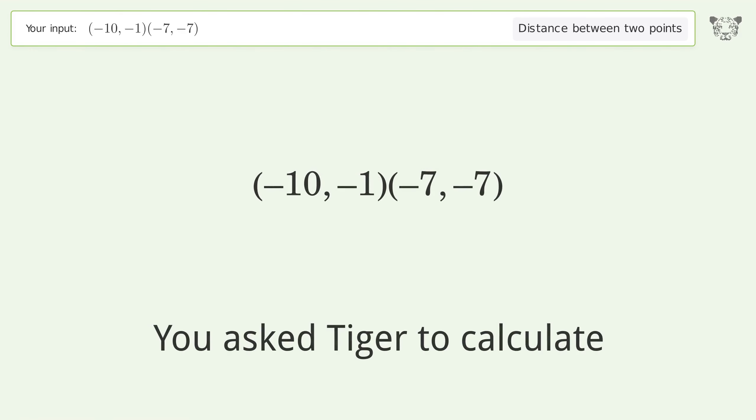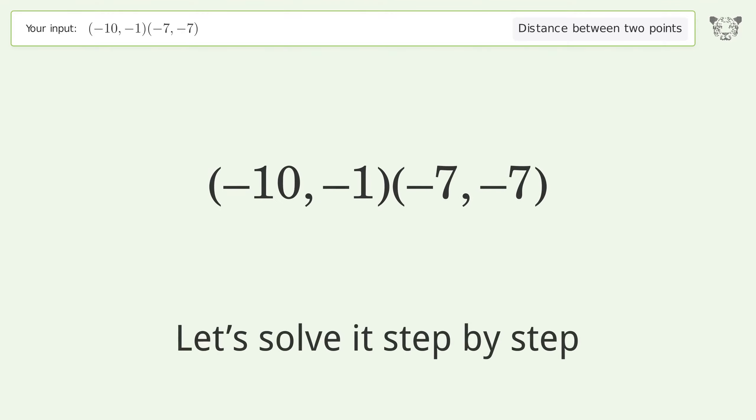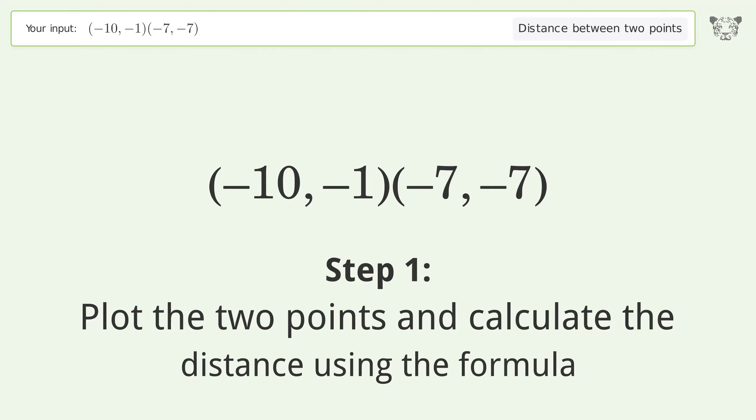You asked Tiger to calculate the distance between two points. The distance between the two points is the square root of 45 or 6.708. Let's solve it step by step. Plot the two points and calculate the distance using the formula.